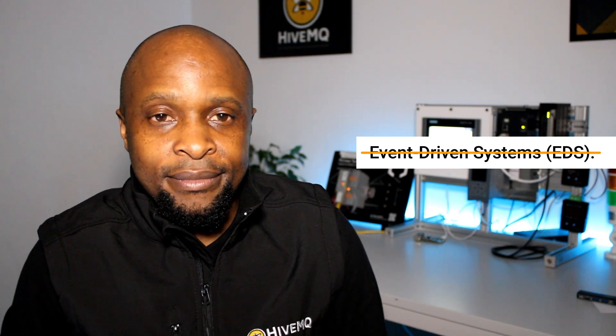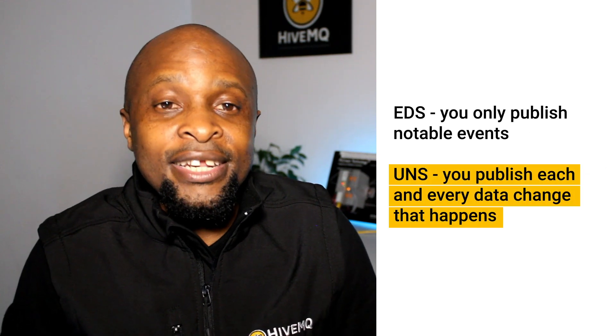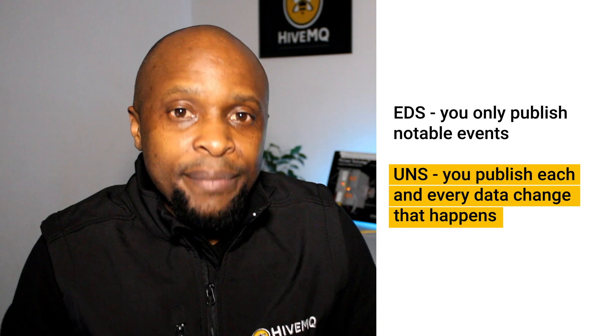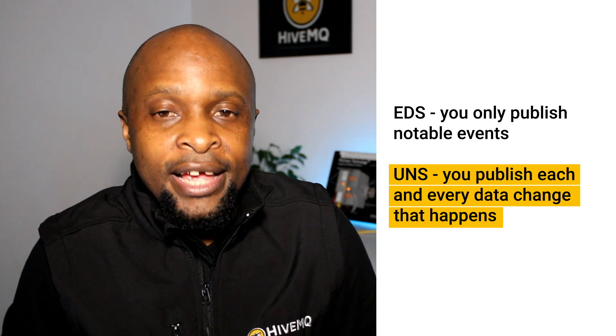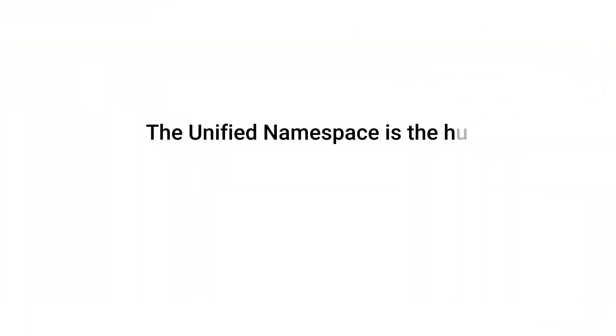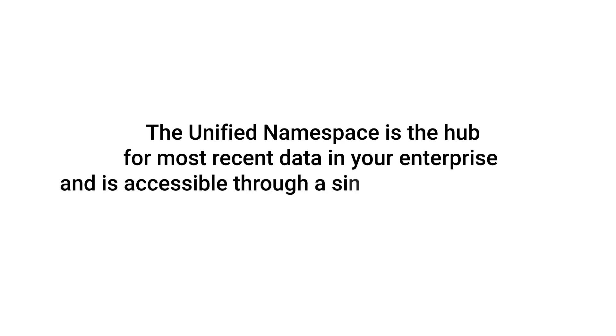If you have a background in IT, you may be tempted to think of UNS as an event-driven system. Indeed, there are similarities, but only to a certain degree. The difference is that an event-driven system only publishes notable events, while UNS allows you to publish every data change. The unified namespace is the hub for the most recent data in your enterprise, accessible through a single unified interface.